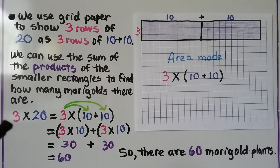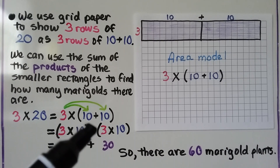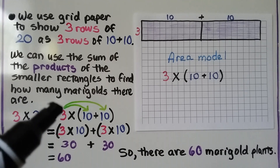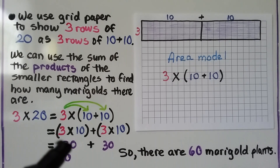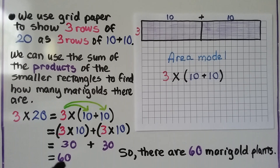We use grid paper to show three rows of 20 as three rows of 10 plus 10. We can multiply 3 times 20 as 3 times 10 plus 10. We distribute the 3 to each 10: 3 times 10 plus 3 times 10. It might be easier to multiply smaller numbers like tens. 3 times 10 is 30, plus another 3 times 10 is 30. 30 plus 30 is 60, so there are 60 marigold plants.